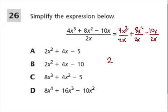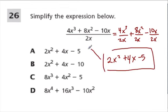And then we just divide the parts. 4 divided by 2 is 2. x to the third divided by x is x squared. And then we add. 8 divided by 2 is 4. x squared divided by x is just x. And then minus, 10 divided by 2 is 5. x divided by x is just 1. So here's our answer. It's choice A.